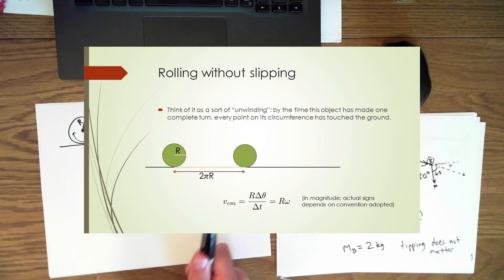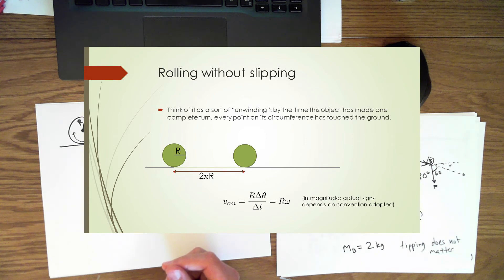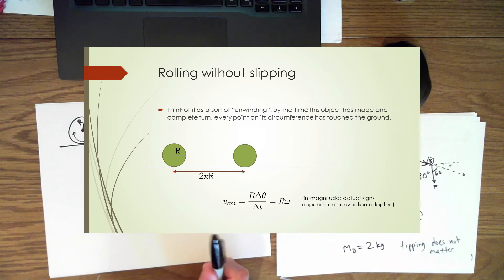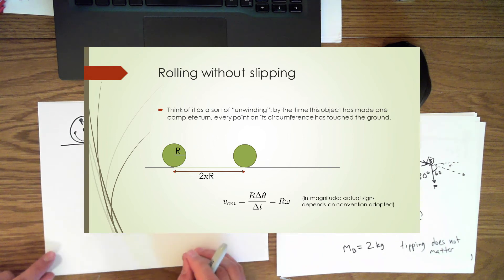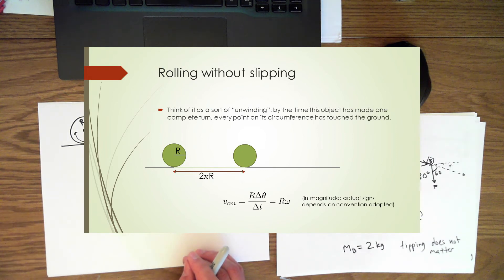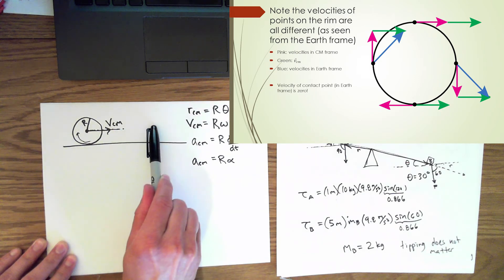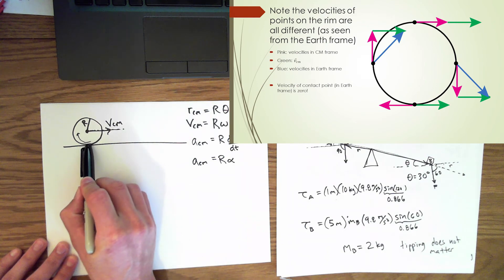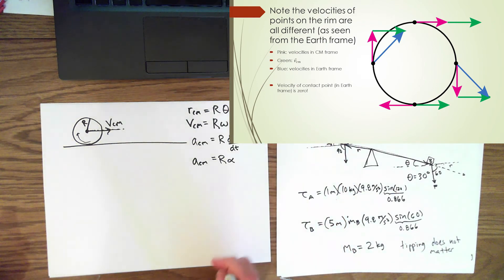Another key point: the velocity of different points along the rim of the rolling object are different. Most importantly, the point in contact with the surface has zero velocity instantaneously — that's what it means to roll without slipping. As soon as it leaves that contact point, its velocity becomes non-zero. Because of this, there is a static friction acting at the point of contact between the rolling object and the surface.